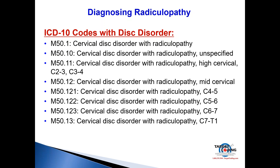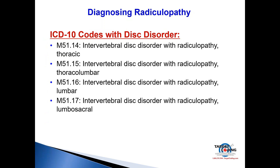Now moving into disc disorders with radiculopathy in the thoracic and lumbar regions: M51.14 is disc disorder with radiculopathy in the thoracic region. Radiculopathy can occur in any part of the spine, though it is not very common in the thoracic region — that's where your differential diagnosis expertise must kick in.